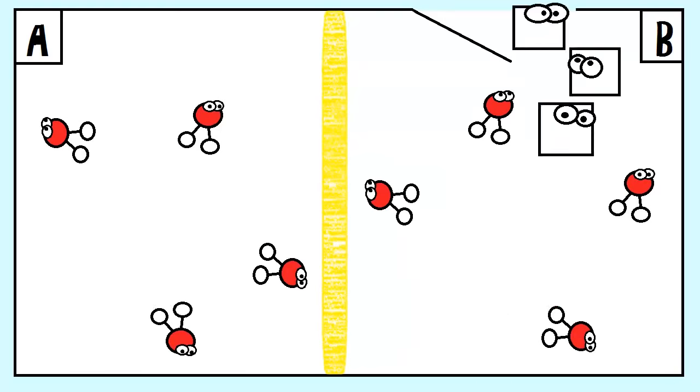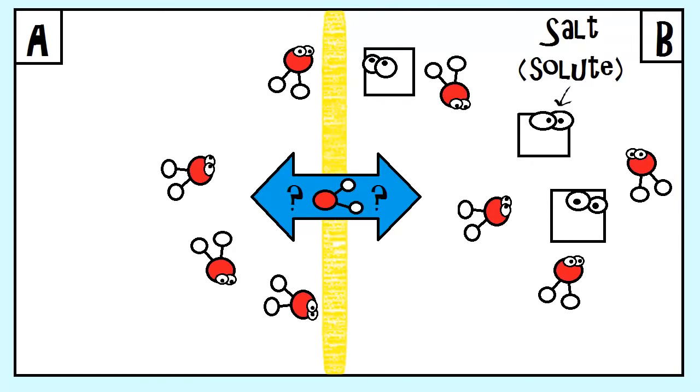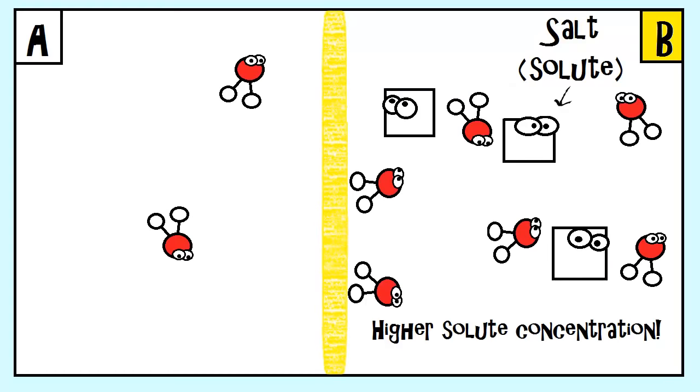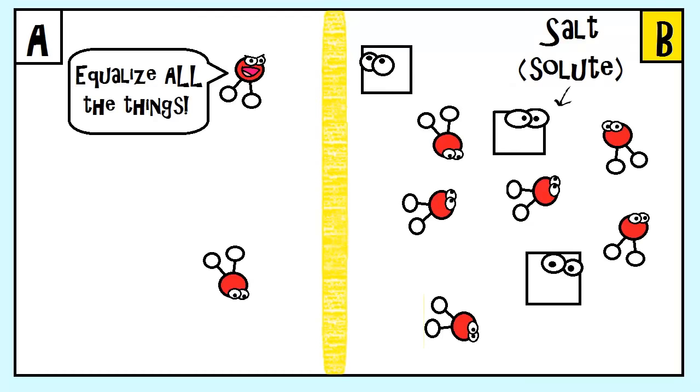Now let's imagine on side B you dump a huge amount of salt there. So which direction will the water move towards? A or B? The answer is B. This area has a high solute concentration. And remember, water moves to areas of higher solute concentration. You can almost think of the water as trying to equalize the concentrations, diluting side B.